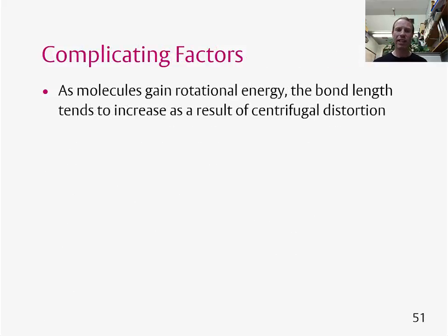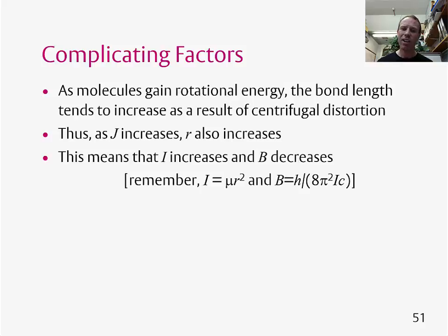There's a slight complicating factor that we need to think about. And this is as molecules gain rotational energy, as they spin faster, that's a classical picture you need to remember, the bond length tends to increase as a result of centrifugal distortion. So as J, the rotational quantum number increases, the bond length r also increases. And if r increases, this means that I, the moment of inertia, increases, but B, the rotational constant, decreases.